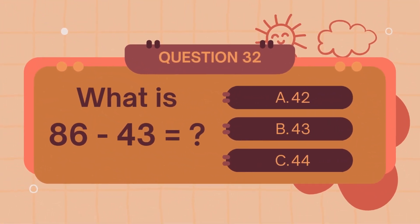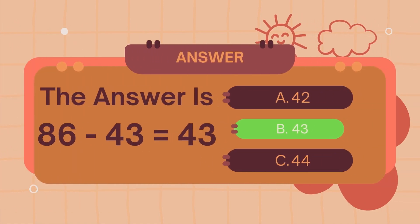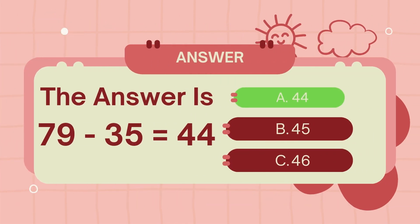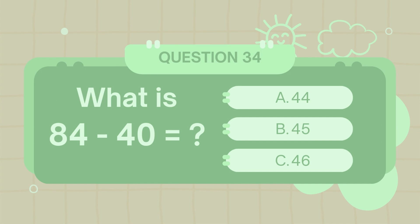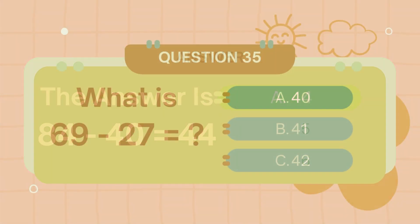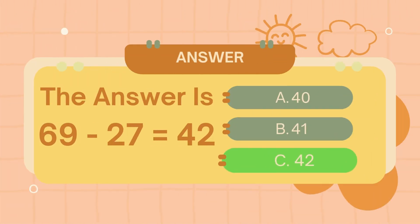What is eighty-six minus forty-three? The answer is forty-three. What is seventy-nine minus thirty-five? The answer is forty-four. What is eighty-four minus forty? The answer is forty-four. What is sixty-nine minus twenty-seven? The answer is forty-two.